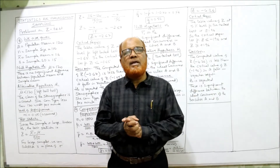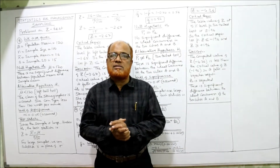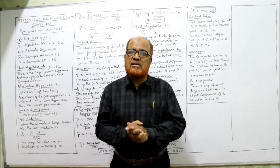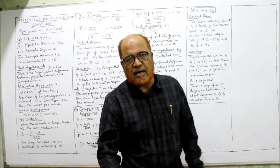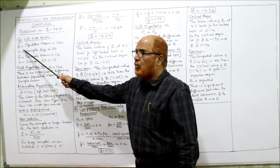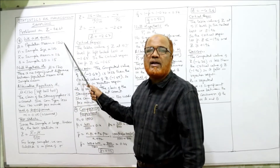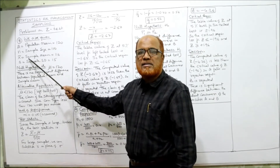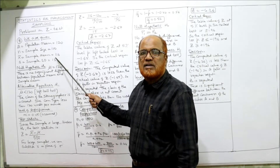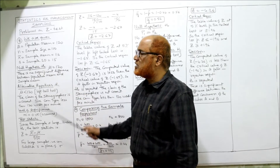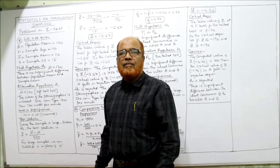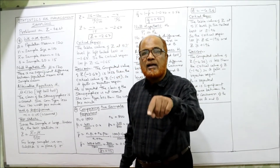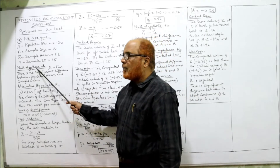This is a problem of mean and standard deviation, not of proportions as we saw in the last video. Sample mean, sample standard deviation, and population mean are given. We are given mu, the population mean, that is 120 words per minute. Sample size n is 100 trials. X-bar, the sample mean, is 116 words per minute. Small s, the standard deviation, is 15 words. This is the complete information given.